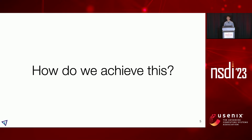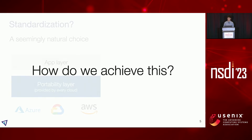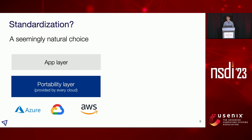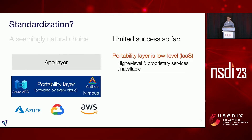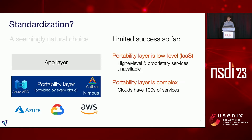So this all sounds good, but how do we make Sky Computing happen? One seemingly natural choice is standardization — building a portability layer implemented by every cloud. But we argue these proposals have had limited success for a few reasons. Such a portability layer is typically low-level, focusing on infrastructure as a service, meaning higher-level, more proprietary services are not available. Supporting all hundreds of cloud services would be very complex. Perhaps most importantly, cloud providers don't have the incentives to support standardization because they don't want to become commodities.